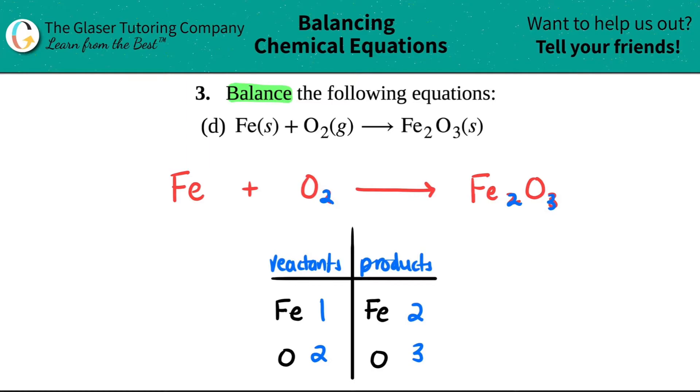So some students would say, okay, this seems to be easier, because I can always just times one by two to get two. So I'll put a two here. Let's just say that. Okay. Now let's try to work with the oxygens.